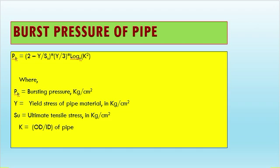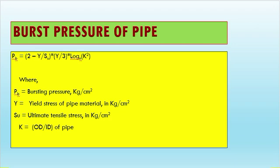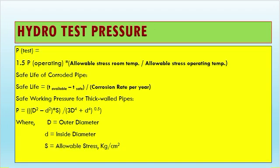Next is burst pressure — how to calculate the burst pressure of a pipe. The formula is: PV = 2 × (SY / SU) × (Y / 3) × ln(K²). Here, PV is burst pressure in kg/cm², SY is yield strength of pipe material in kg/cm², SU is ultimate tensile stress in kg/cm², and K equals OD divided by ID. This gives the burst pressure of the pipe.